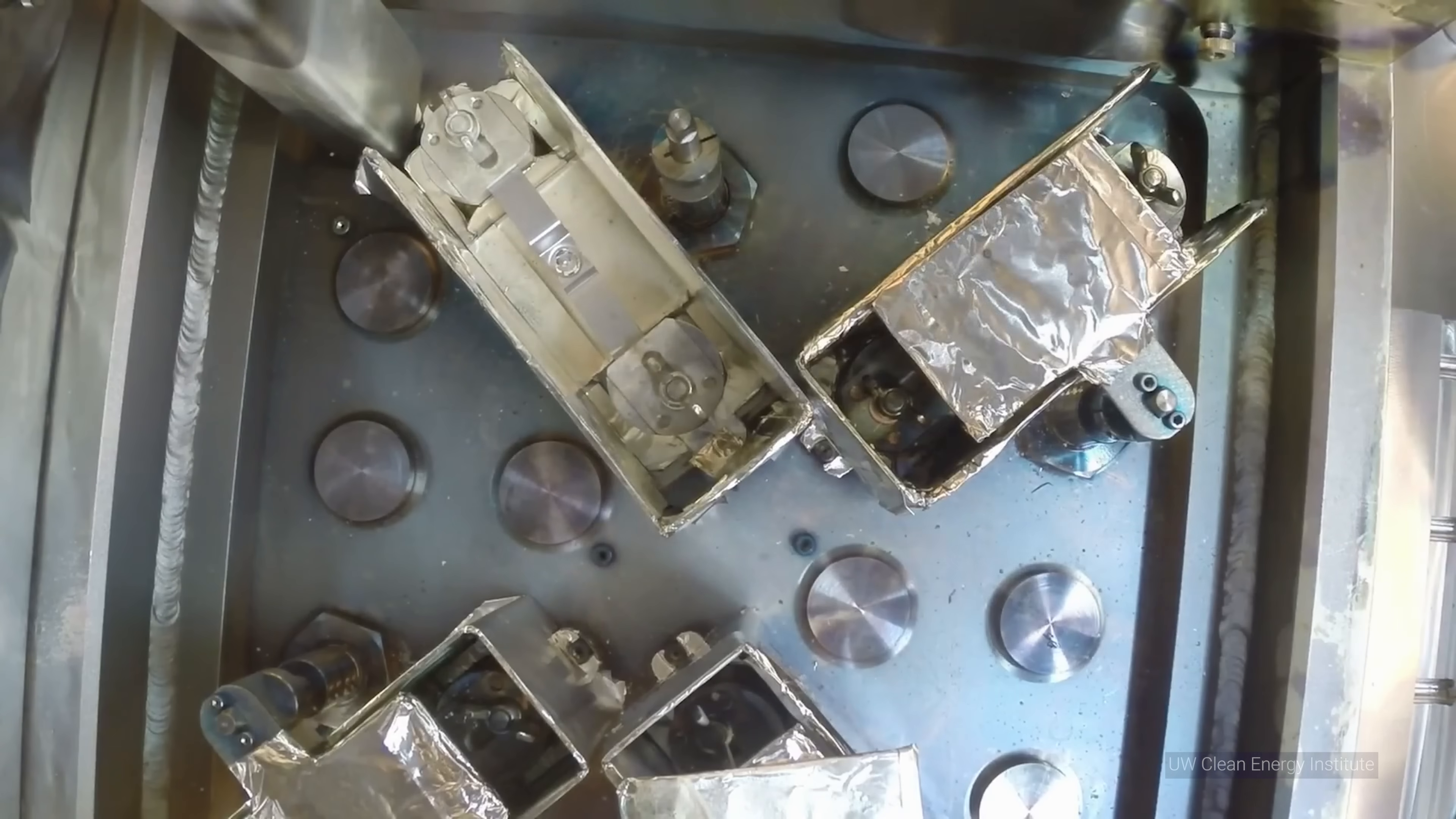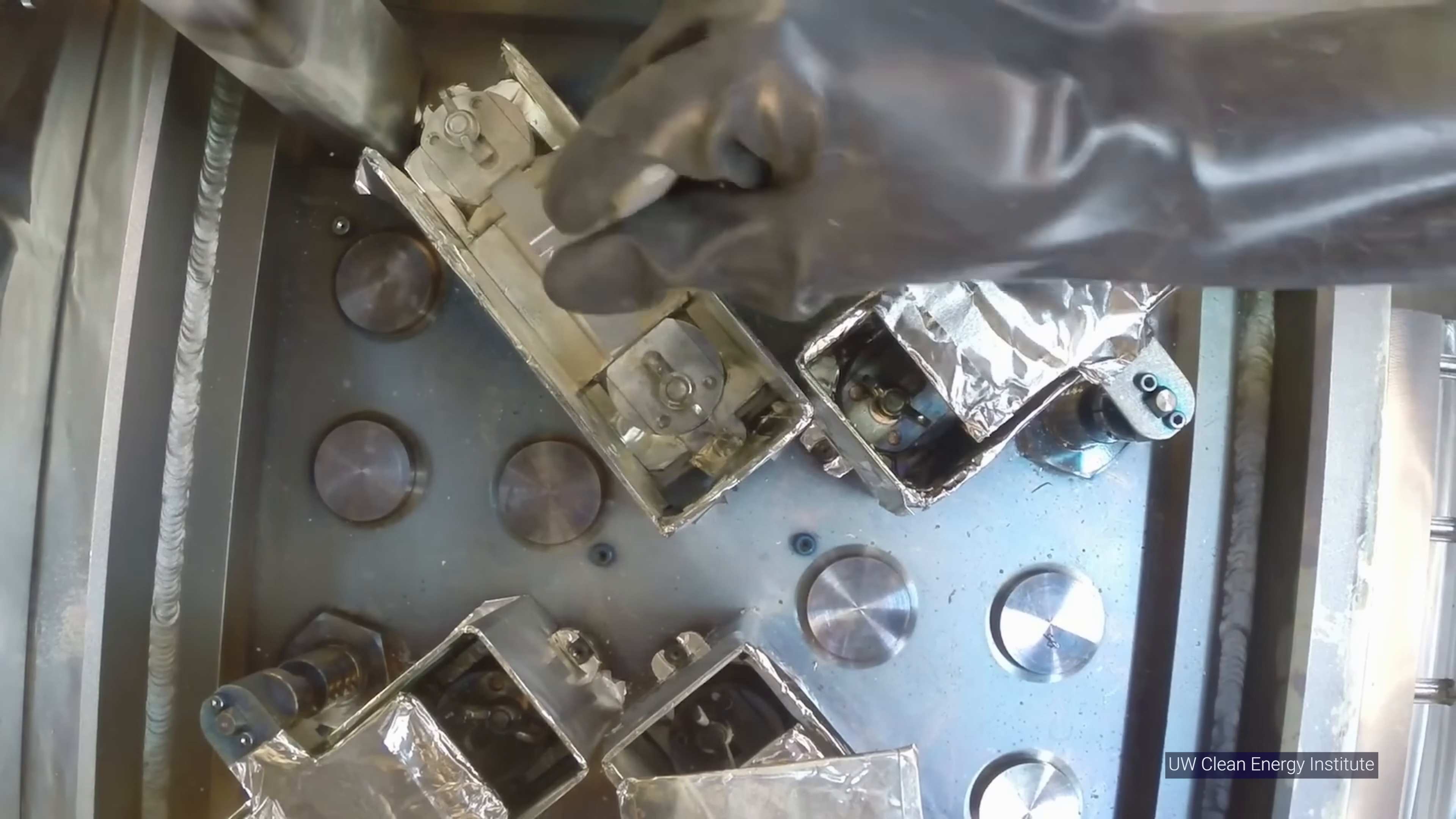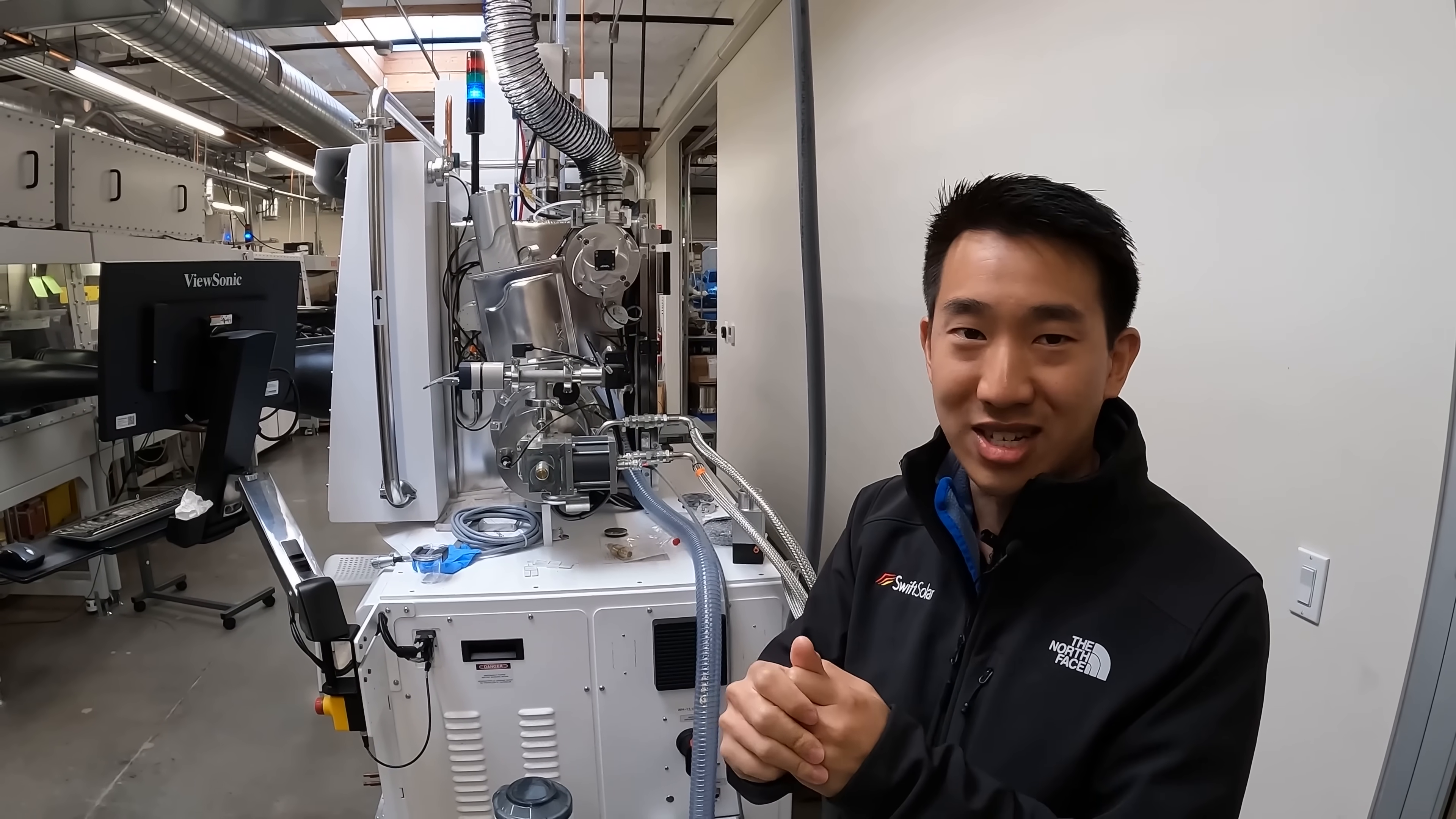Where you heat up a source material, maybe it's silver, or maybe it's a precursor for one of your semiconductors. And you melt it, you evaporate it, and then you have a cold surface that you condense on. And that cold surface is actually just at room temperature. It's a plastic sheet or a glass sheet or even a silicon wafer that you're trying to deposit a film on.